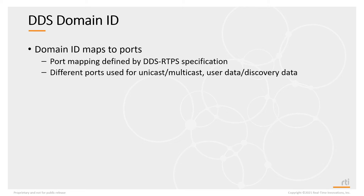The port mapping is actually specified by the DDS RTPS specification because you need to be interoperable — the ports that RTI Connext DDS uses must be the same ports that other DDS implementations use so that different DDS systems can actually talk to each other. There are different ports used for unicast data versus multicast data, and different ports for user data versus discovery data — essentially four types: unicast user data, multicast user data, unicast metadata, and multicast metadata. The ports are based on the domain ID as well as a participant index.